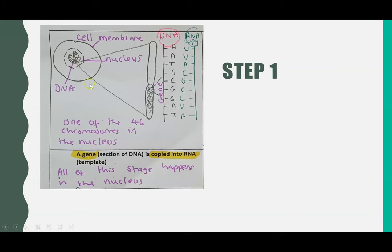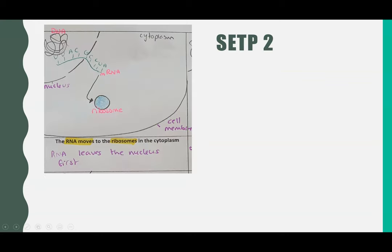A gene is a section of DNA. The DNA cannot leave the nucleus because if it does, it's at risk of being broken down and destroyed. So here we can see a gene — a small section of DNA on one of the chromosomes — being copied into RNA. It still works by complementary base pairing, but because it's RNA there are only U bases instead of T. So A is complementary to U, T is complementary to A, G to C, and C to G. All of that stage happens in the nucleus, and we now have the RNA copy of one gene.